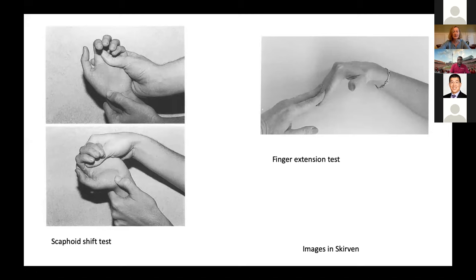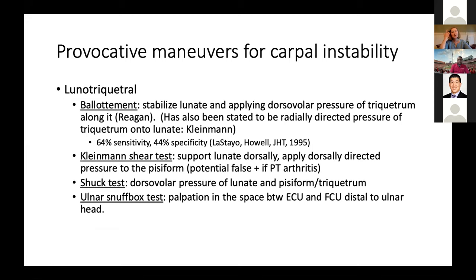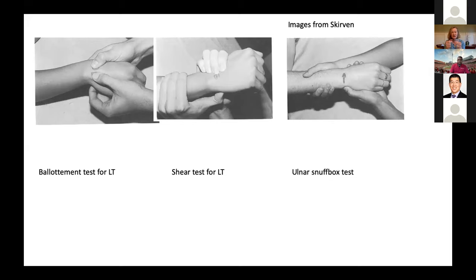For the lunotriquetral exam, there's been a lot written, but tests are not always as precise as they look and can be difficult. The ballottement test moves the lunate against the triquetrum. The shear test holds the lunate stable and uses your thumb to press against the pisiform-triquetral complex up against your lunate to see if it's painful. The ulnar snuff box test is to push on the triquetrum between ECU and FCU to see if pushing causes pain — this can also be positive in ulnotriquetral tears, so be cautious about interpretation.